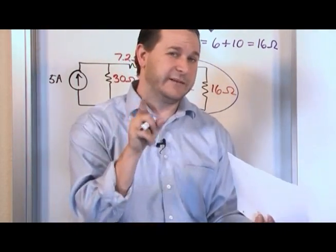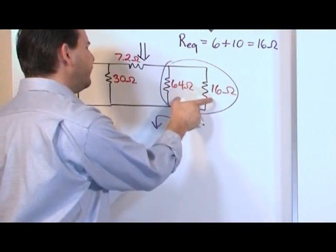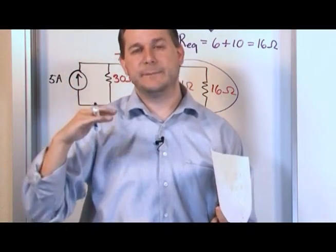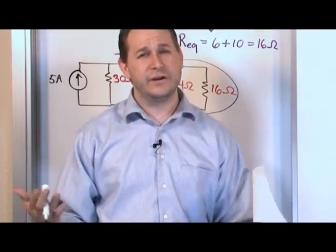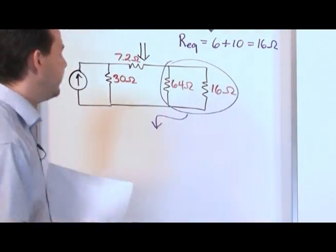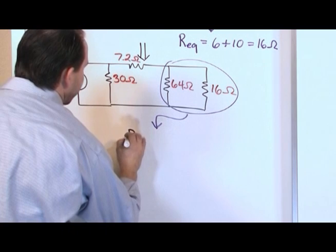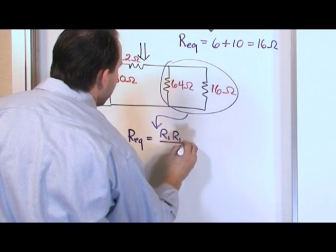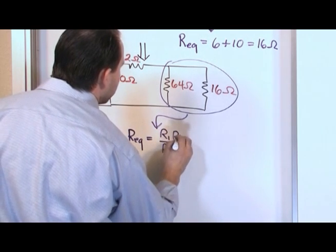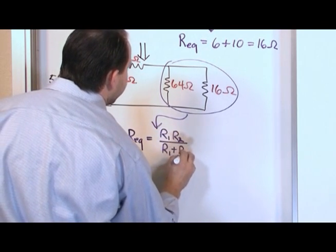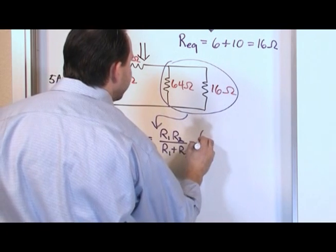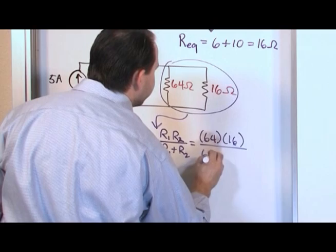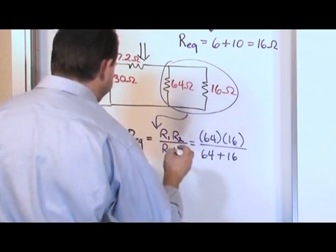So, the general form we already know. We talked about that, but we said there's a specific special case. If you have two of these guys in parallel, it's their product divided by their sum. Product over sum. Say that to yourself. You're just going to use it a lot. Product over sum. That's how you simplify this. So, you just say the equivalent resistance is equal to the product. Let's do it like this to refresh your memory. R1, R2 over R1 plus R2. So, in this case, it's simply 64 times 16 over 64 plus 16.